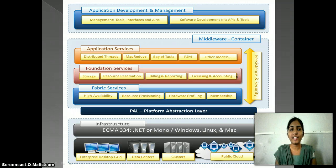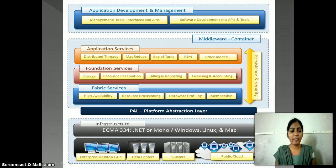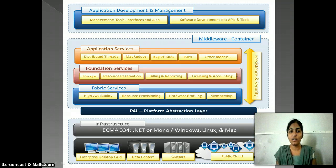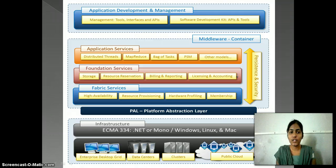The architecture of Anika consists of different services broken up into fabric services, foundation services, and execution services. Fabric services directly interact with the node through the platform abstraction layer and perform hardware profiling and dynamic resource provisioning. Foundation services identify the core system of the Anika middleware, providing basic features to enable Anika containers. Execution services directly deal with the scheduling and executing of applications in the cloud.